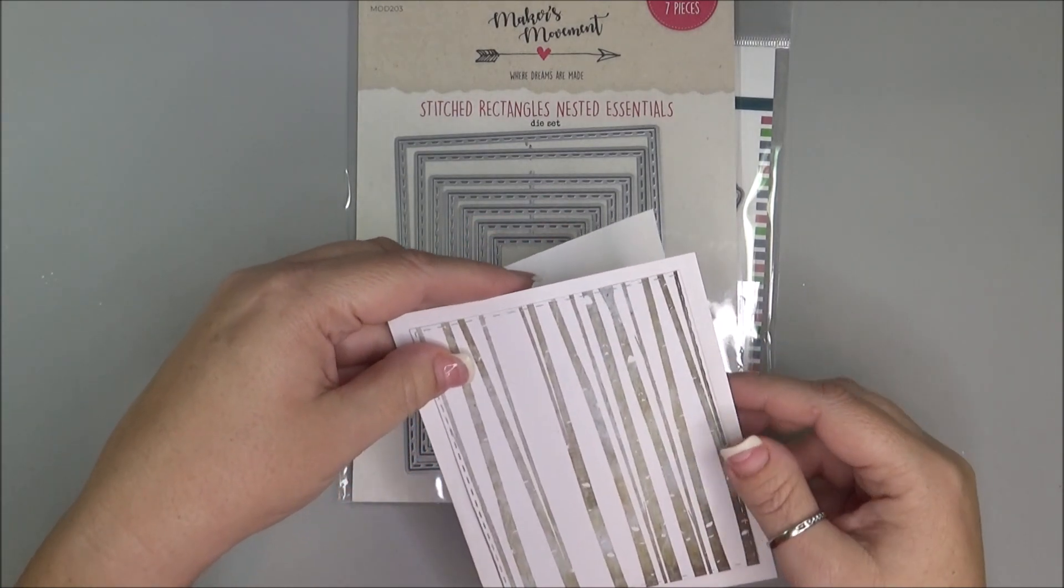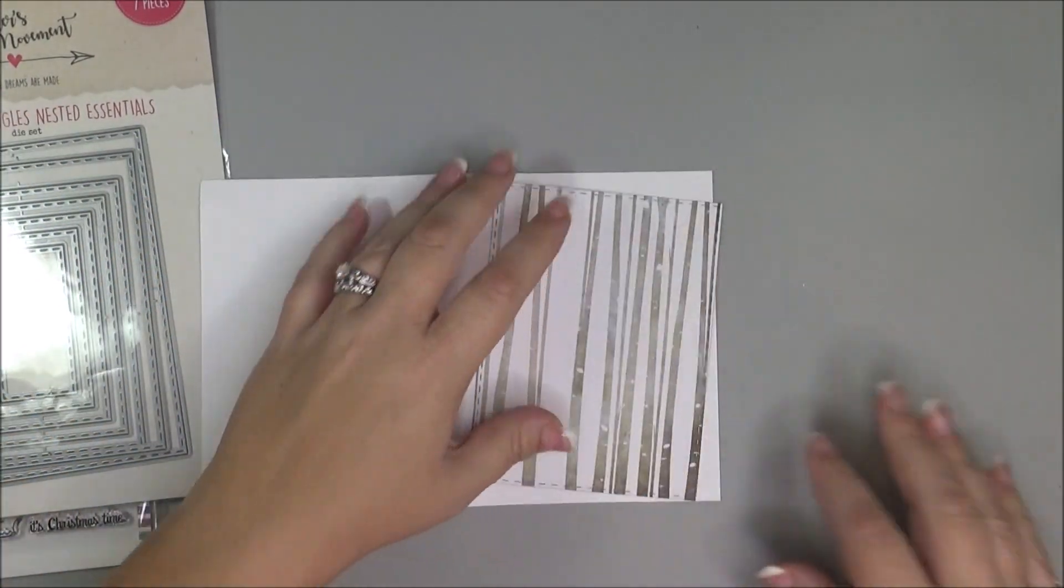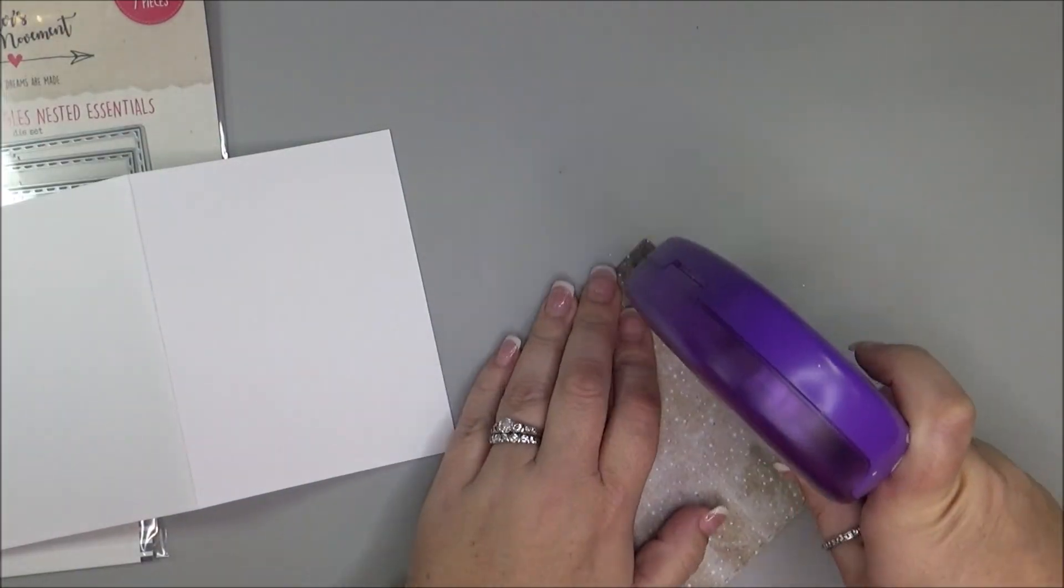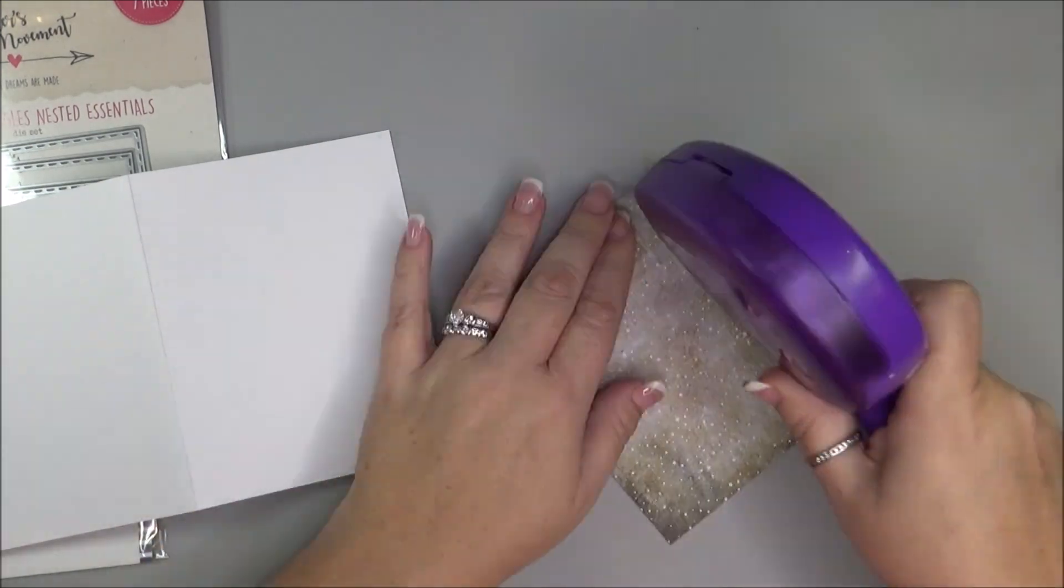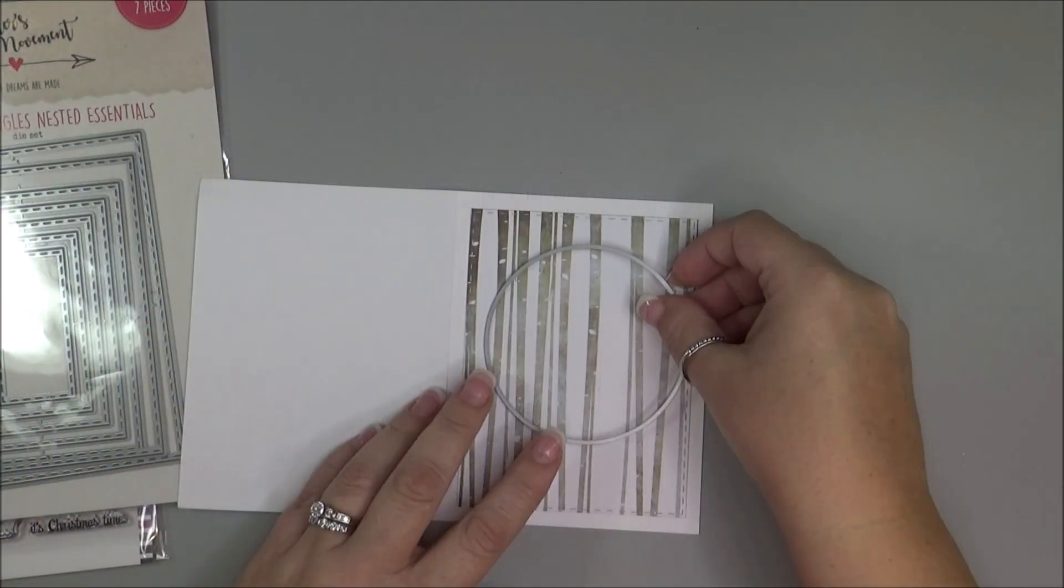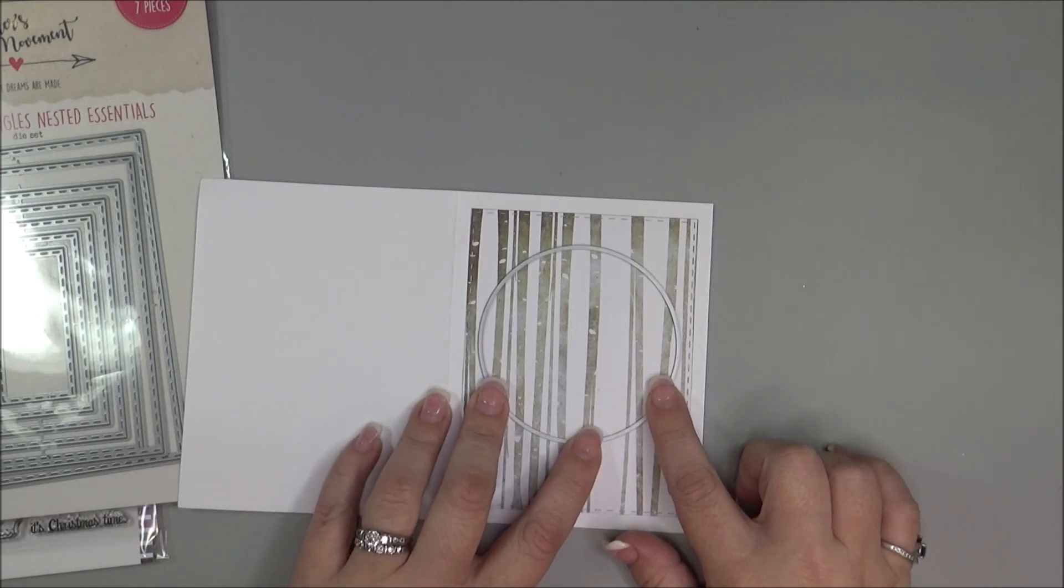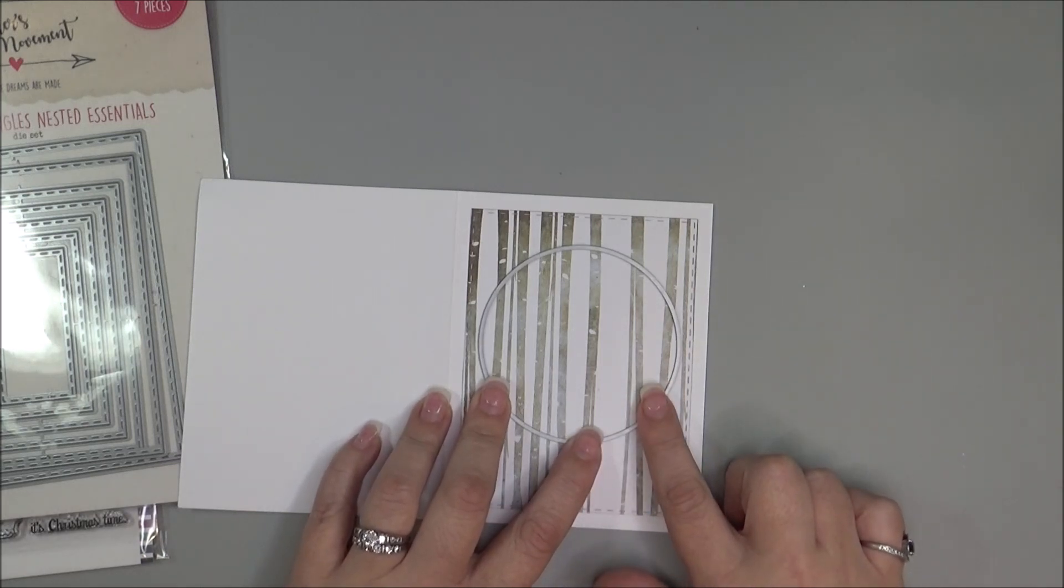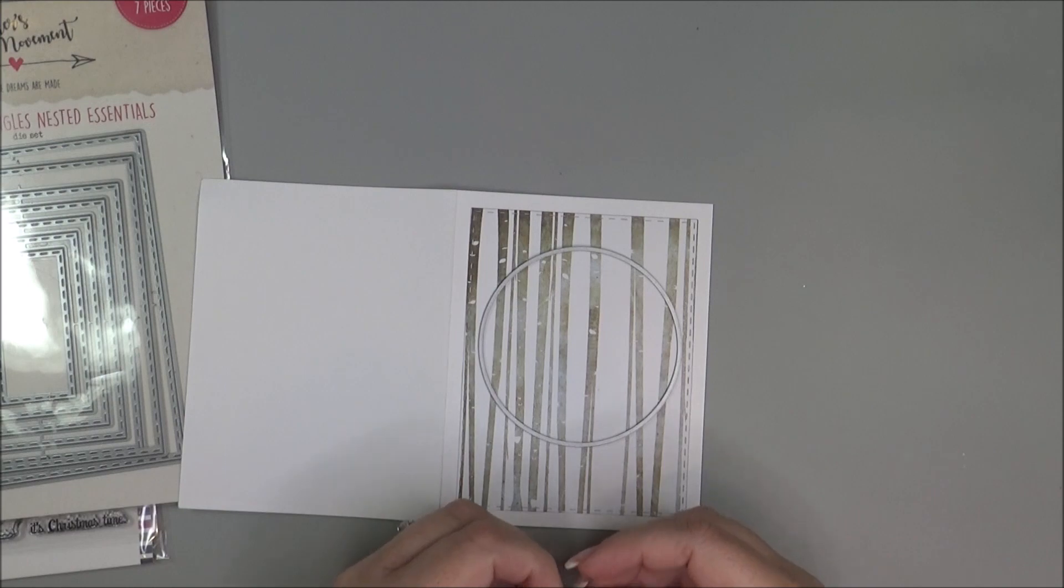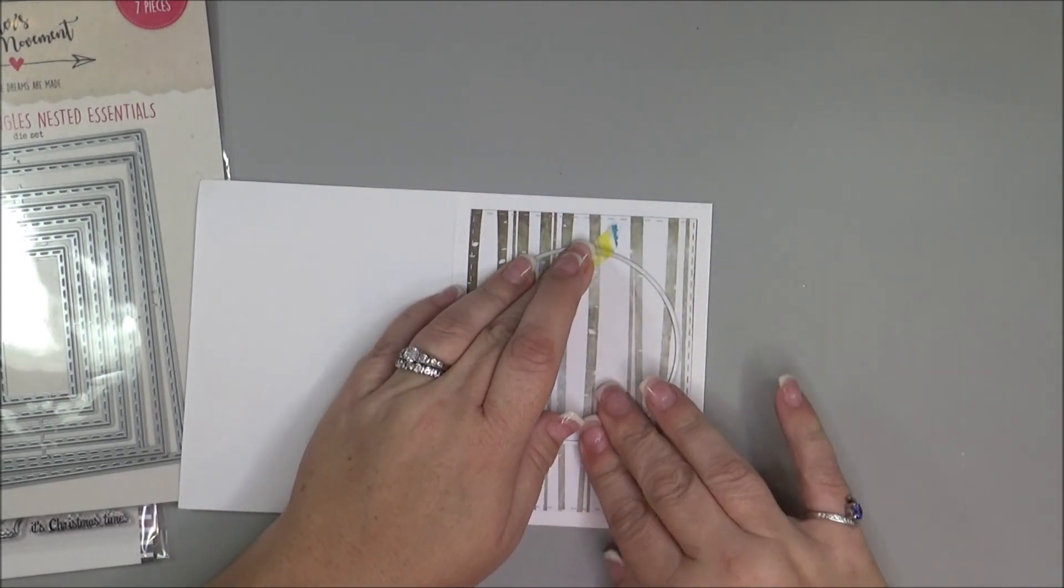So the first thing I'm going to do is attach this onto my card front using my Xyron Mega Runner. And then next, just using a circle die, I'm going to place that right on the front. Just kind of eye it to center and use a little piece of washi tape to hold it into place. And then I'm going to die cut that out.